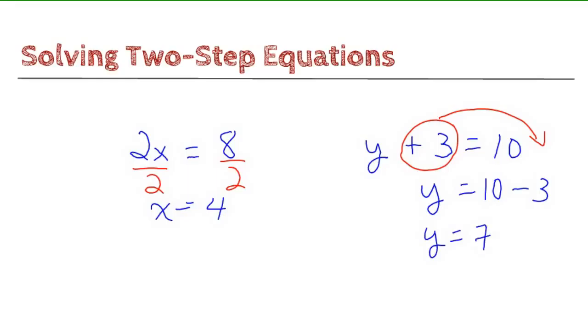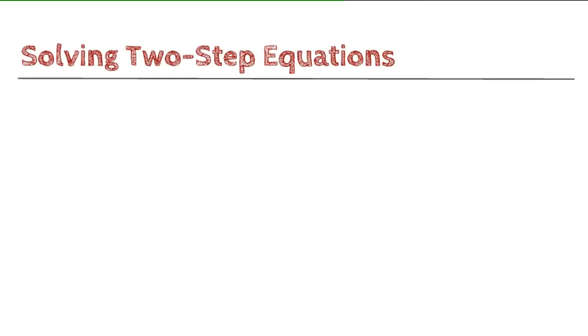So what we've been doing have been only one-step equations. But what we're going to be seeing today is going to involve two steps to solve. So for example, what you might see is something that looks like this. So 2a plus 5 is equal to 11. And in order to get my variable by itself, I'm going to need to do a couple of things first.